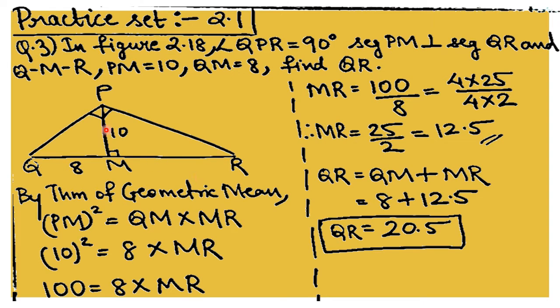We use the geometric mean theorem: PM is the geometric mean of QM and MR, so PM² = QM × MR. Substituting, 10² = 8 × MR, giving MR = 100/8 = 12.5. Then QR = QM + MR = 8 + 12.5 = 20.5. Again a simple application of the geometric mean theorem.